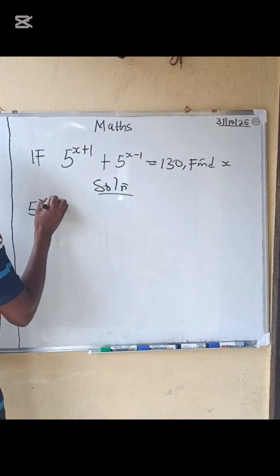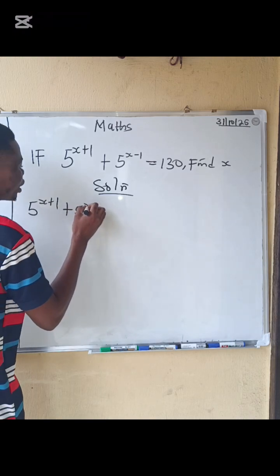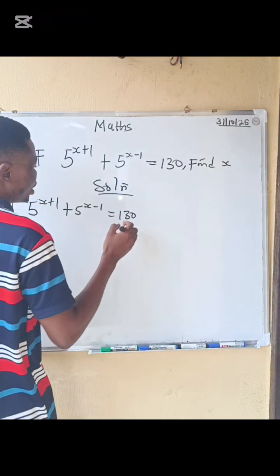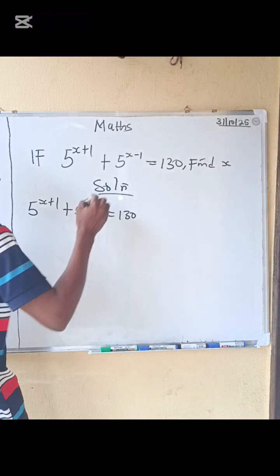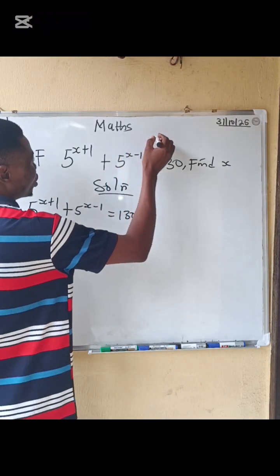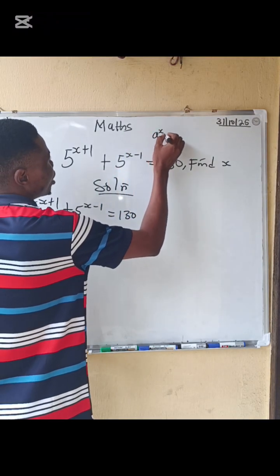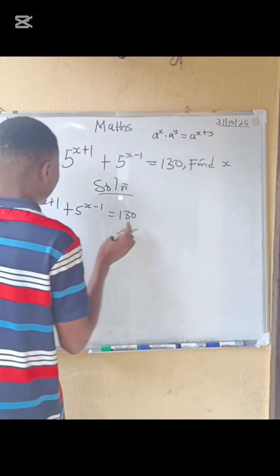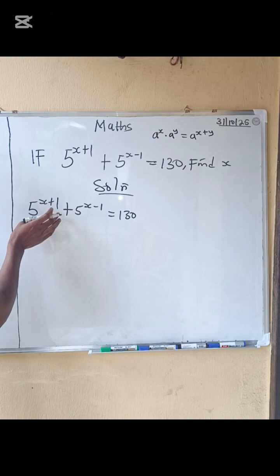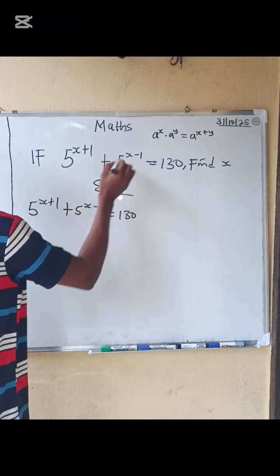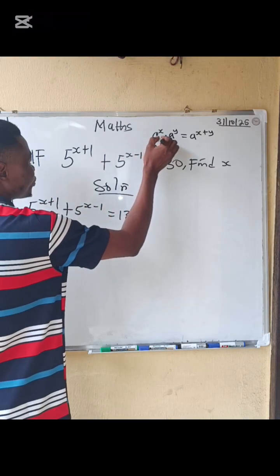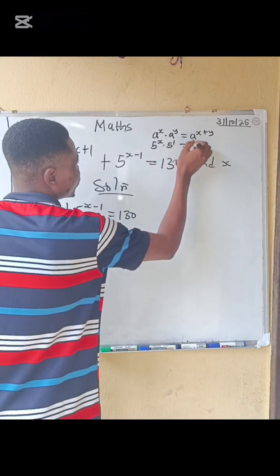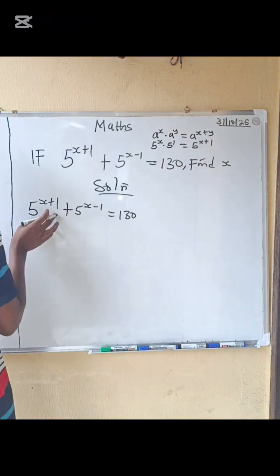We have five to the power of x plus one, plus five to the power of x minus one, equals 180. Let's recall the multiplication law: if you have a to the power x multiplied by a to the power y, the answer is a to the power x plus y. Applying that here, five to the x plus one equals five to the x multiplied by five to the one.